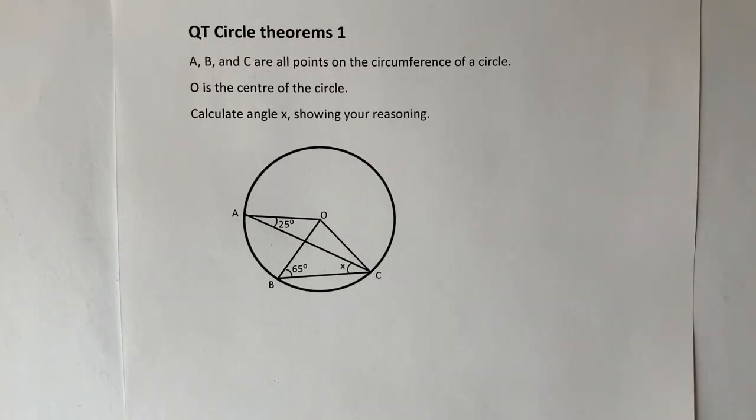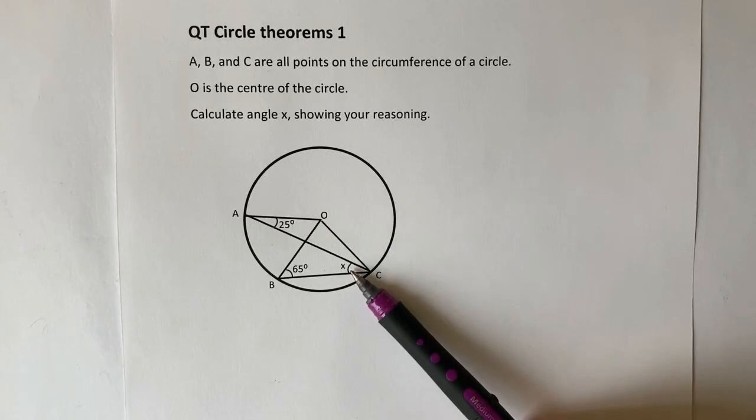So it says A, B and C are all points on the circumference, O is the centre, calculate X. So in other words, what they want to know is this angle here.